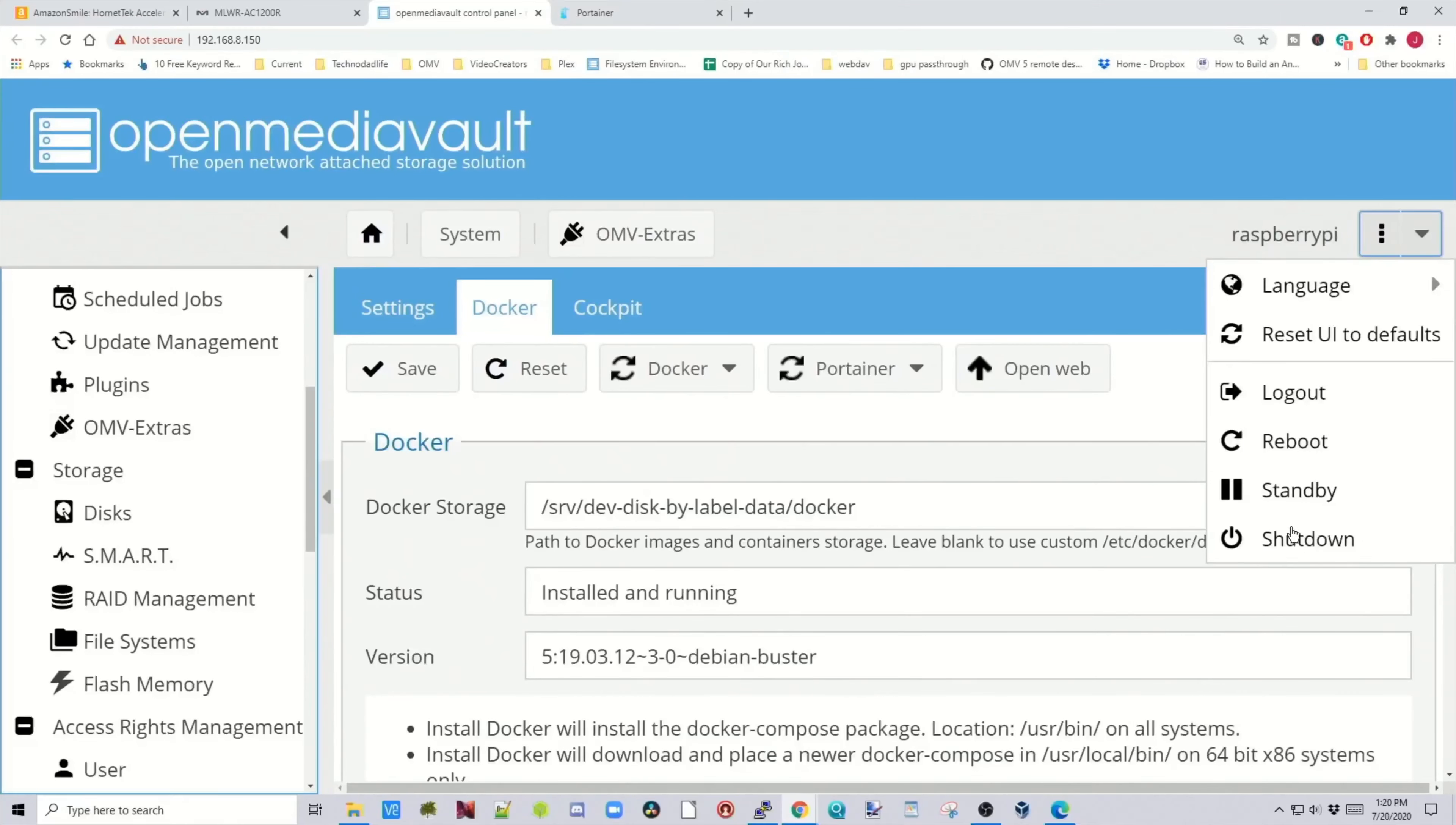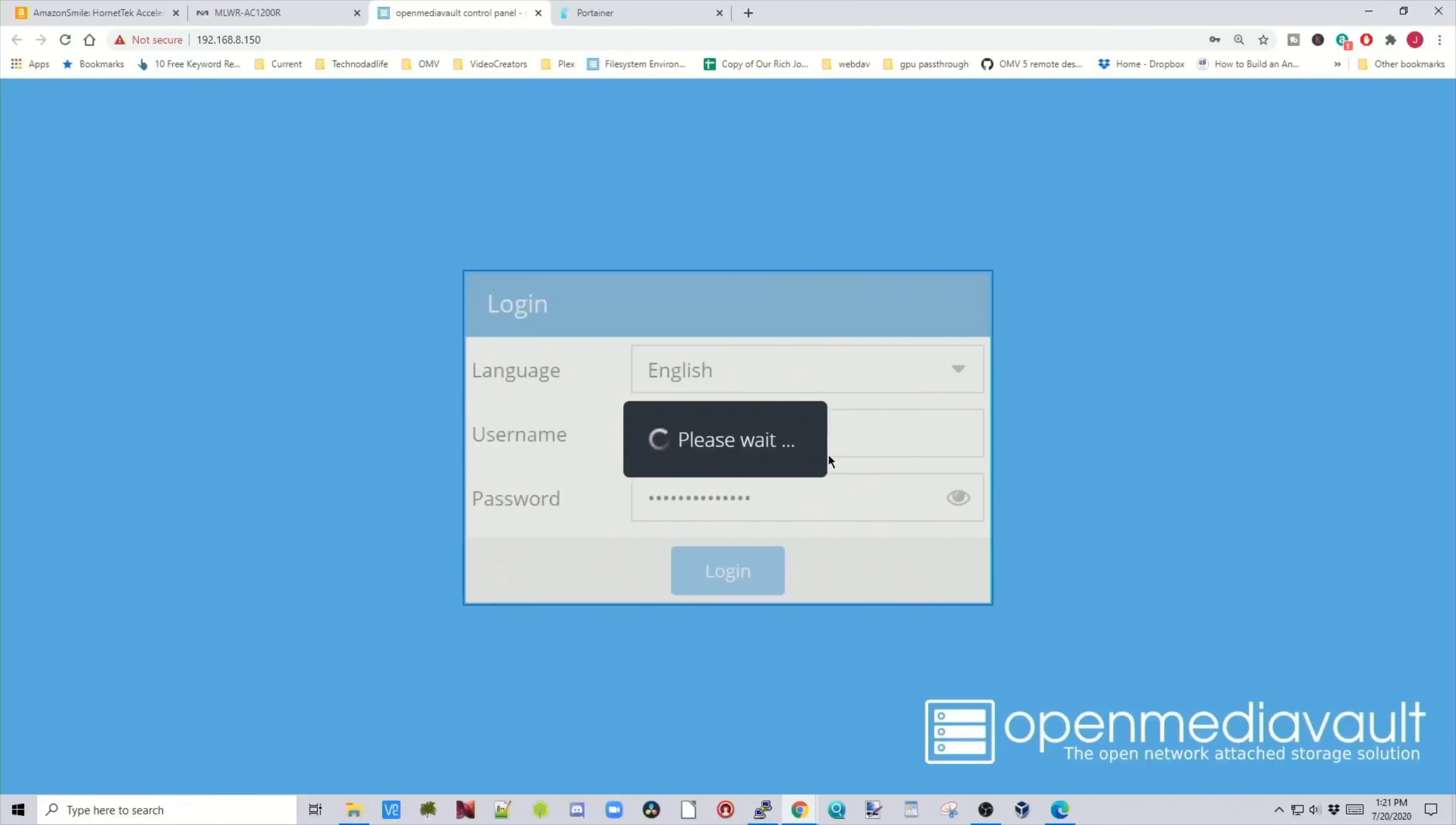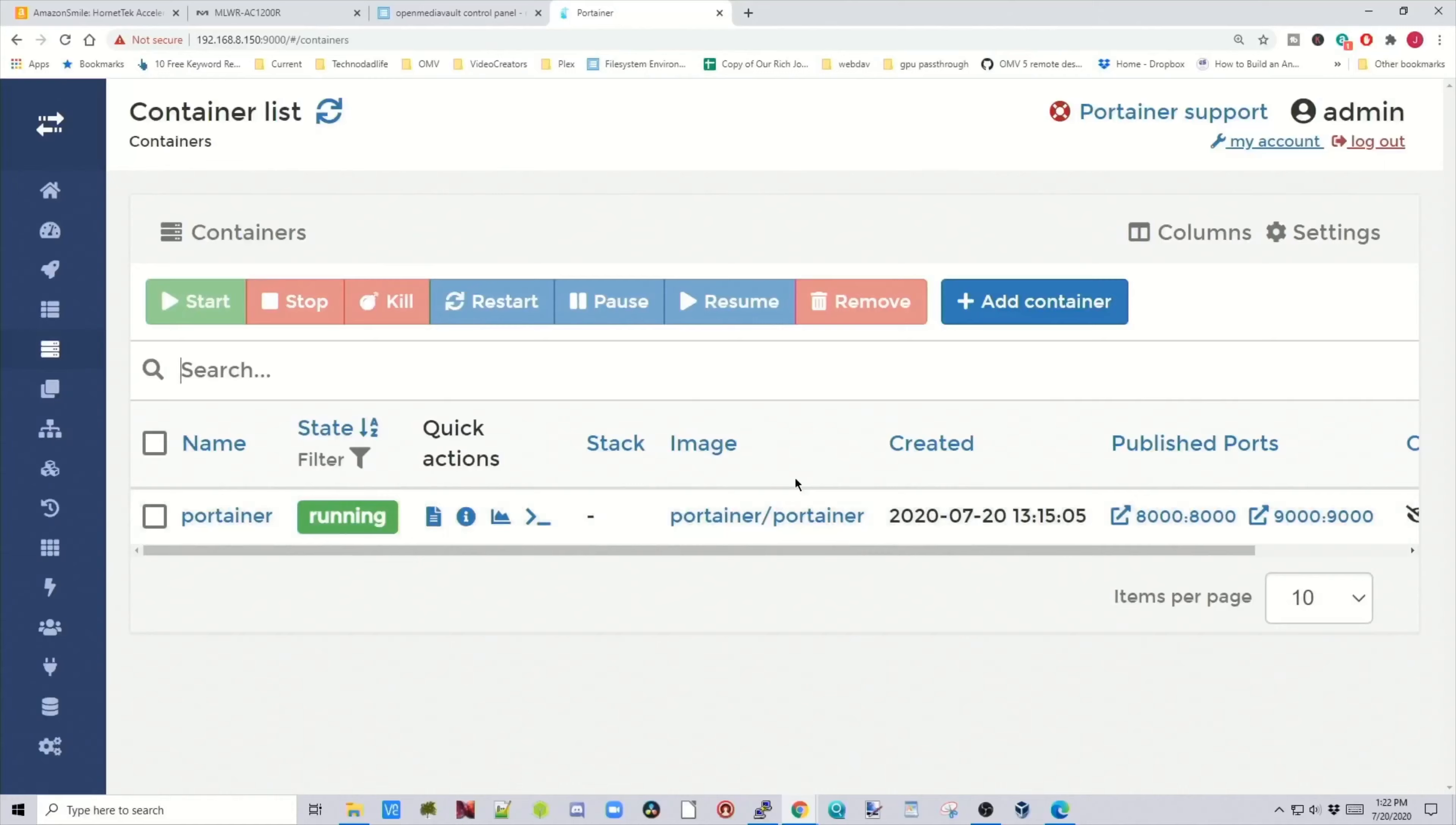And now what we're going to do is restart Open Media Vault and see if there are any problems when we do that. So we're going to reboot, and hit yes. Log in as admin and your password. Let's go back to Portainer. We'll just refresh this page, and we seem to have logged in fine, and our containers are running. Pretty cool setup if you have your Docker files off of your OS drive.